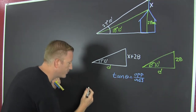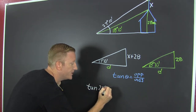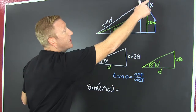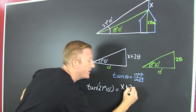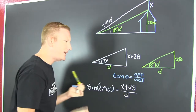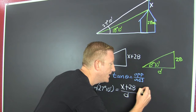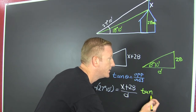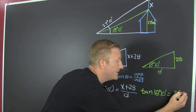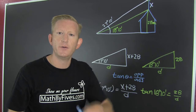Here we can set up two relationships. The tangent of 27 degrees 10 minutes is going to be equal to the opposite, which is the antenna plus the house — X plus 28 — divided by D. And the tangent of this triangle is the tangent of 18 degrees 10 minutes, which is going to be 28 divided by D. Now we have two equations and two unknowns. We know how to solve that.